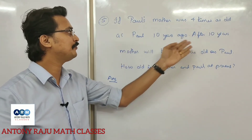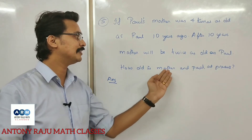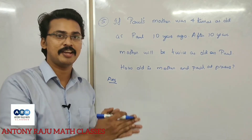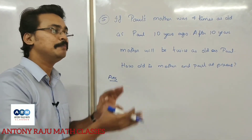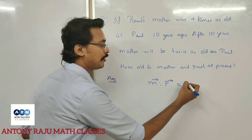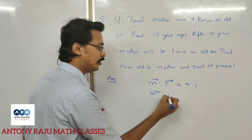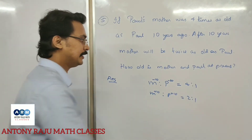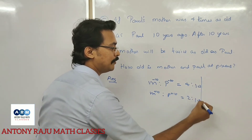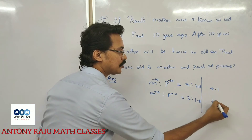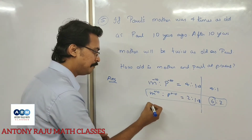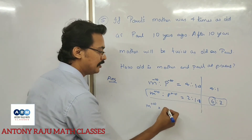The fifth question: if Paul's mother was 4 times as old as Paul 10 years ago, and after 10 years the mother will be twice as old as Paul, how old are mother and Paul at present? Here is the shortcut method: 10 years ago the ratio was 4 to 1, and after 10 years the ratio is 2 to 1. The difference between ratios is 3 minus 1, and we cross-multiply.